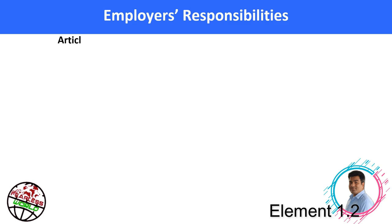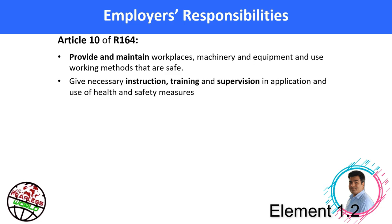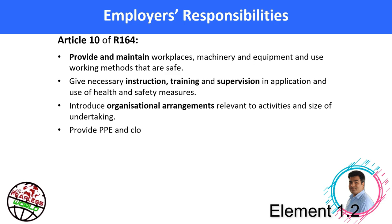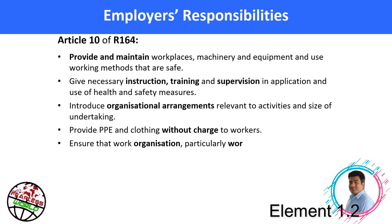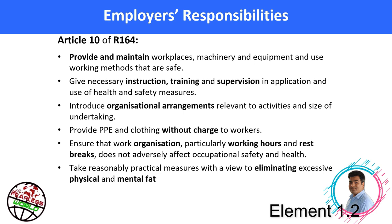The employer must provide a safe place of work, safe plant and equipment, safe systems of work, and training, supervision and competency of staff. As per Article 10 of R-164, employer responsibilities include: provide and maintain workplaces, machinery and equipment using working methods that are safe; give necessary instruction, training and supervision in health and safety measures; introduce organizational arrangements appropriate to the size of the undertaking; provide PPE and clothing without charge to workers; ensure work organization, particularly working hours and rest breaks, does not adversely affect occupational safety and health; take reasonably practicable measures to eliminate excessive physical and mental fatigue; and keep up to date with scientific and technical knowledge to comply with the above.